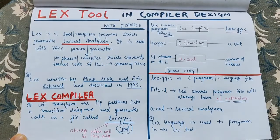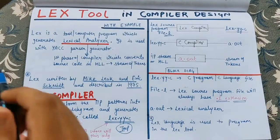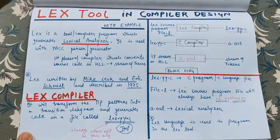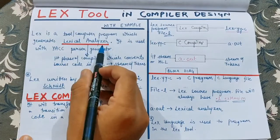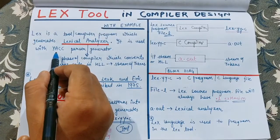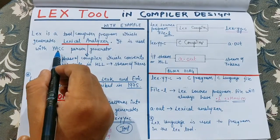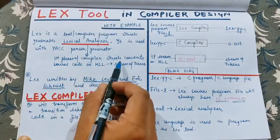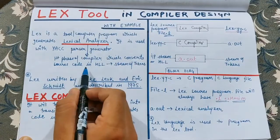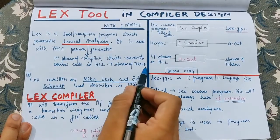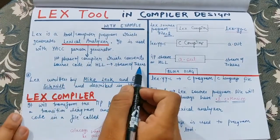Now let's start. So first of all, we'll see some theory in this video and then in the next video I'll show you some examples. Lex is a tool or a computer program which is used to generate the lexical analyzer. The lexical analyzer is the first phase of the compiler. It is used with the YACC parser generator. For the time being, let's focus on Lex only. The lexical analyzer converts the source code — any code written in a high-level language — into a stream of tokens.